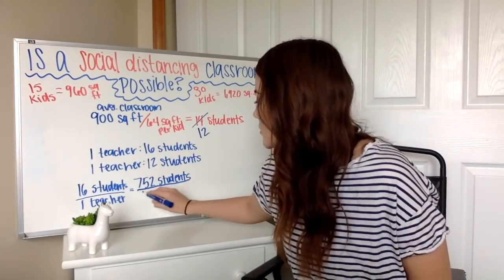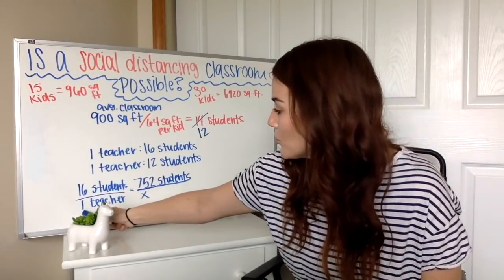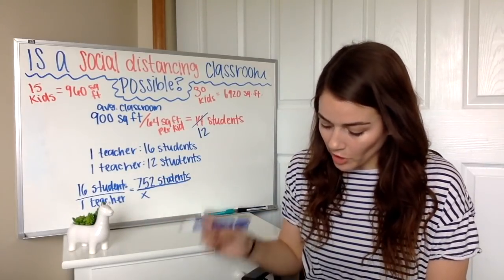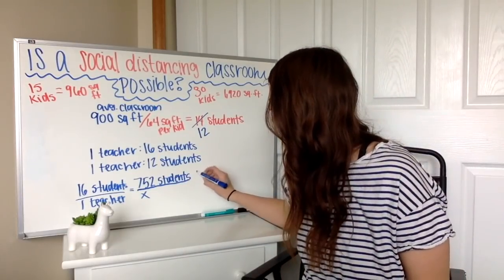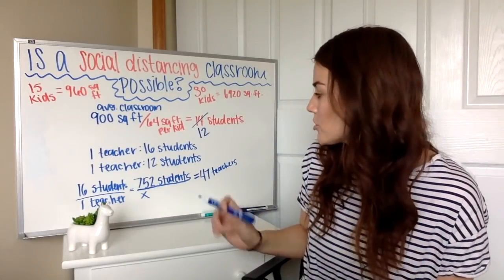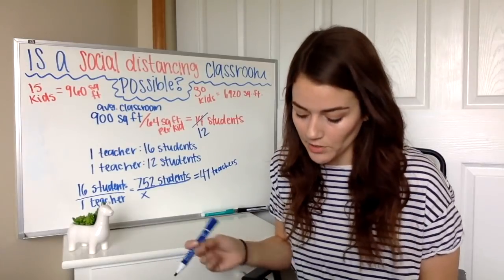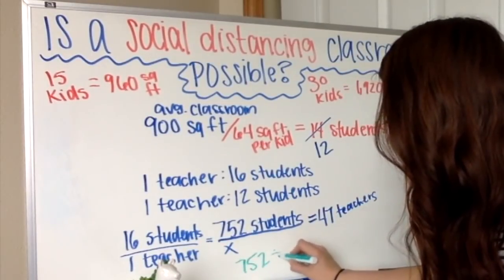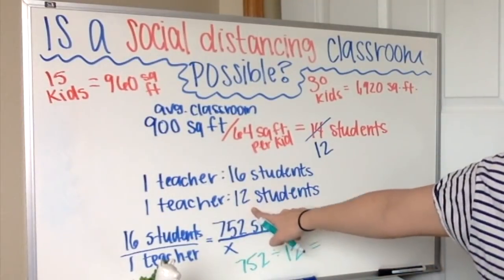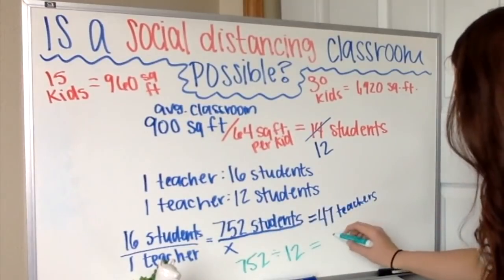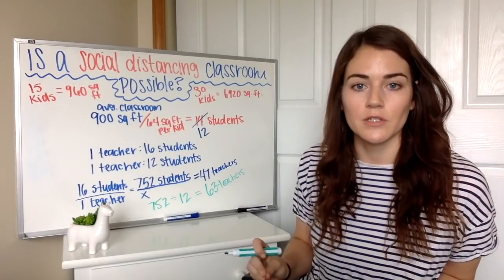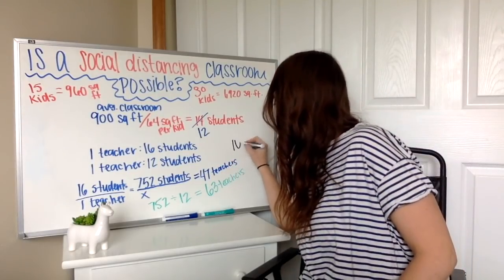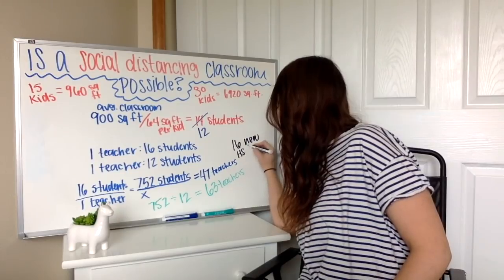You could set up a proportion or just recognize we take 752 divided by 16. Cross-multiplying and dividing, 752 ÷ 16 gives me 47. So on average, I have about 47 teachers per high school. If instead I take 752 and divide by 12 for my new social distancing ratio, I get 63. So I'm going to need quite a few more teachers — 63 minus 47 means I need 16 new high school teachers per school.